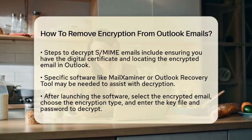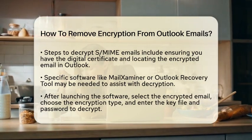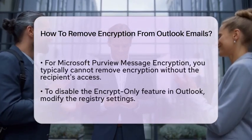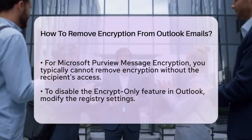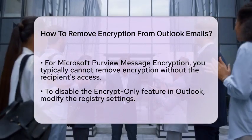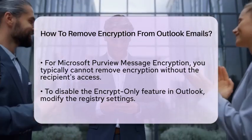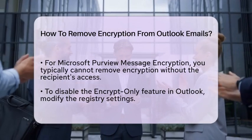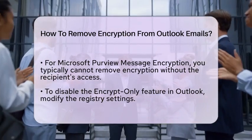If your email is encrypted using Microsoft Purview Message Encryption, the process is a bit different. Typically, you cannot remove encryption without the intended recipient's access. However, you can disable the Encrypt Only feature in Outlook. To do this, you will need to modify the registry. Open the registry editor and navigate to the appropriate registry key. Create a DWORD value and set it to 1. This will help you manage encryption settings more effectively.